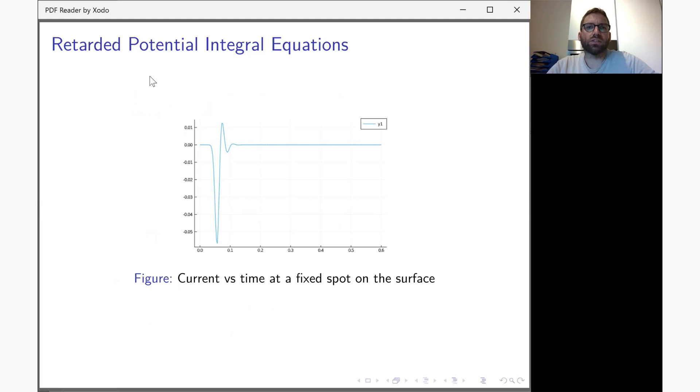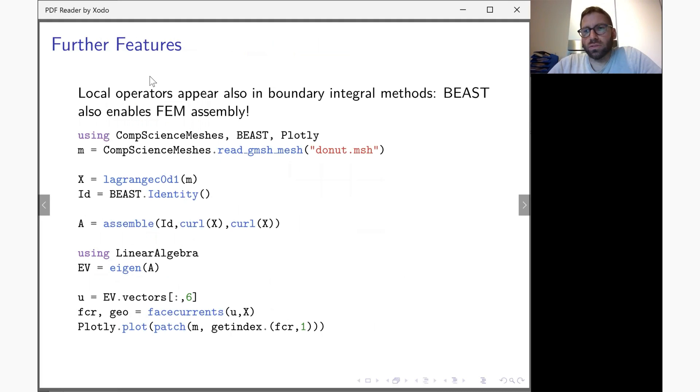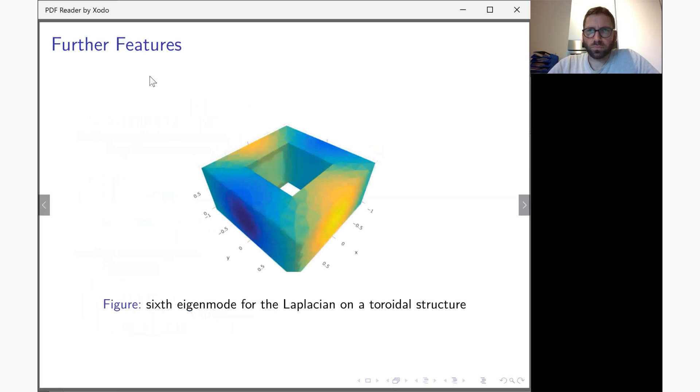Some other features that I will quickly go through before I go to the conclusion slides is that local operators also appear in boundary element methods, so finite element assembly is part of BEAST and you can define quite a lot of fairly complicated finite element problems. Here, for example, this is an eigenmode of the Laplacian defined on the spheroidal objects.